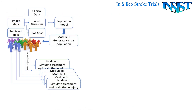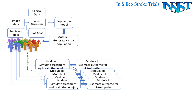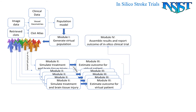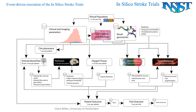At this point, we have methods for generating virtual populations and building blocks that model the crucial processes in stroke and treatment. The next two steps are the estimation of outcome for each of our virtual patients, resembling the collection of data in a real clinical trial, and assembling the in silico trial results into a report on outcome. The whole procedure from generation of the virtual population to delivering the in silico trial outcome is automated as an event-driven process.